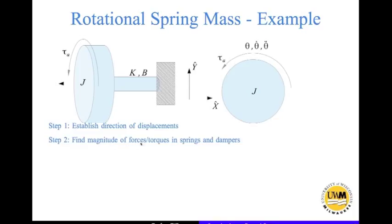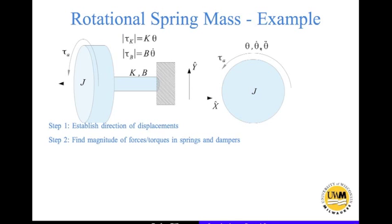The second step is to find the magnitude of torques in the springs and dampers. If the rotational mass is twisted counterclockwise by theta, the spring torque is given by K times theta, where K is the rotational spring constant and theta is the relative angular displacement between the two ends. For the damper, since one end is fixed, the relative angular speed is theta-dot, and the damping torque is capital B times theta-dot, where capital B is the rotational damping constant.